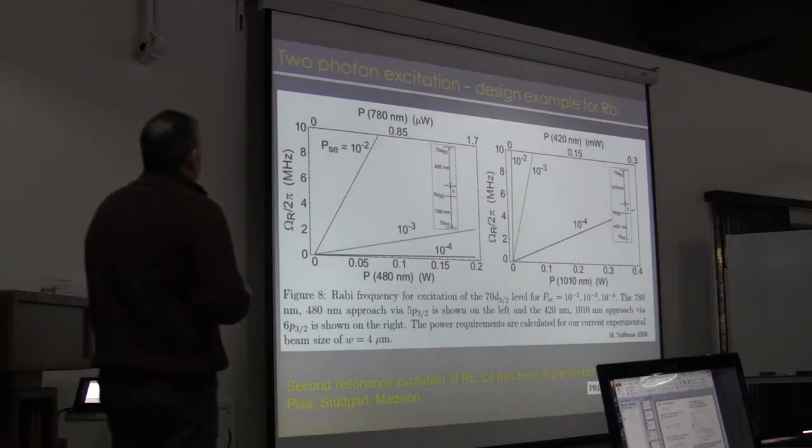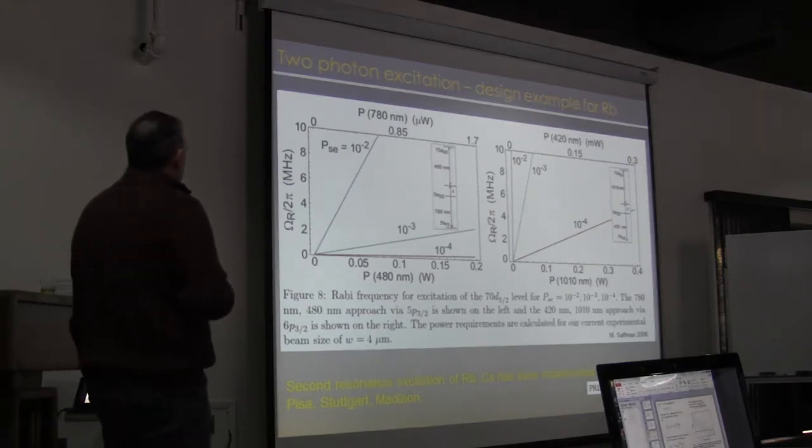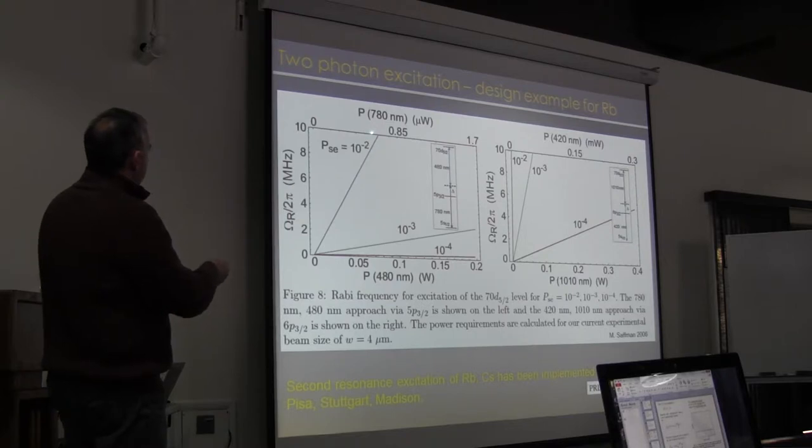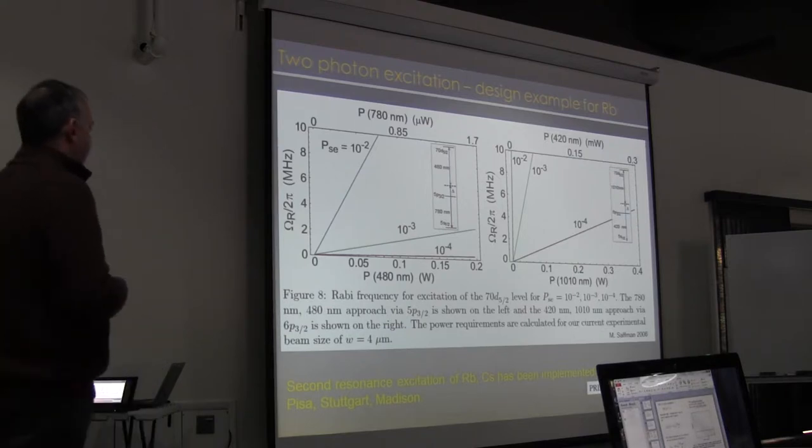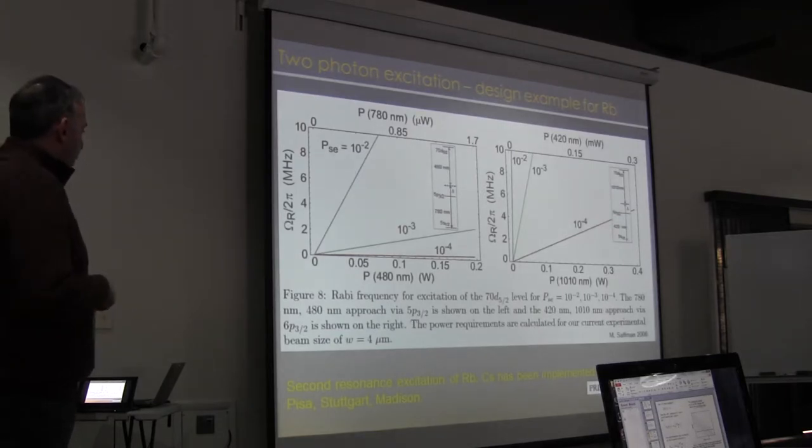And here you see an example showing that comparison. This is for rubidium. If I want to work at fixed spontaneous emission probability, say 10 to the minus 2 or 10 to the minus 3 for high fidelity excitation, then I need a certain power in my beam as the Rabi frequency increases. If I want to work at 10 to the minus 2 and get up to 10 megahertz, here I needed 75 milliwatts in blue. If I did the same things with the second resonance line, I'd greatly reduce the power requirement on the second laser and now down to a much lower power level. So that can be advantageous. And this kind of second resonance excitation is now being done in a couple different groups, Stuttgart and also in Madison.